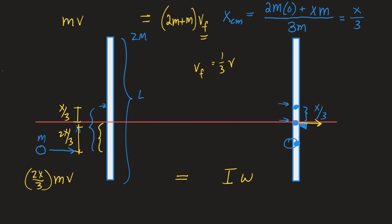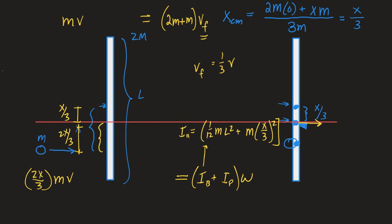We also need to figure out how fast the whole thing spins. The moment of inertia is complicated: there's the moment of inertia of the bar and the puck. The bar is not being spun about its center of mass — it's about a point offset by x/3 — so I have to use the parallel axis theorem. For the puck I use the point mass formula mr squared, where r is 2x/3, so that's m times (2x/3) squared.